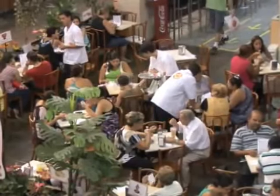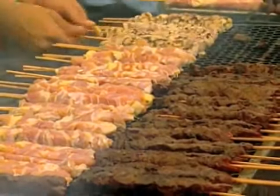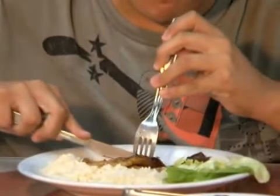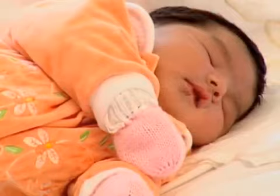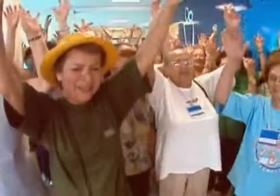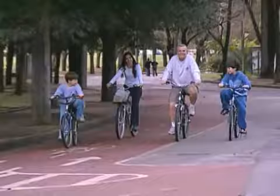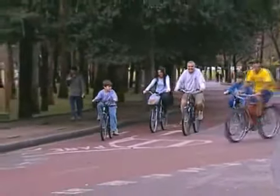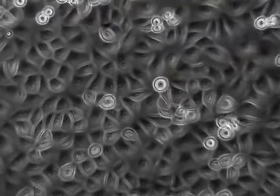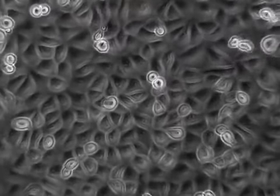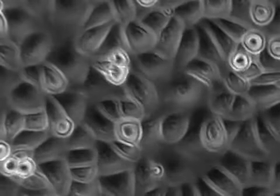A vida de uma célula é bastante parecida com a nossa. Elas se alimentam, crescem, se dividem. A divisão celular é a maneira pela qual a célula tem filhos.